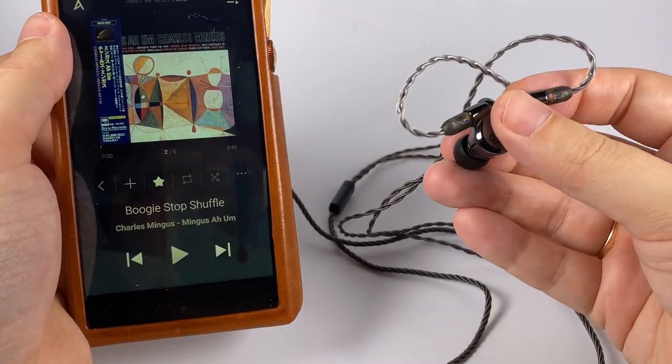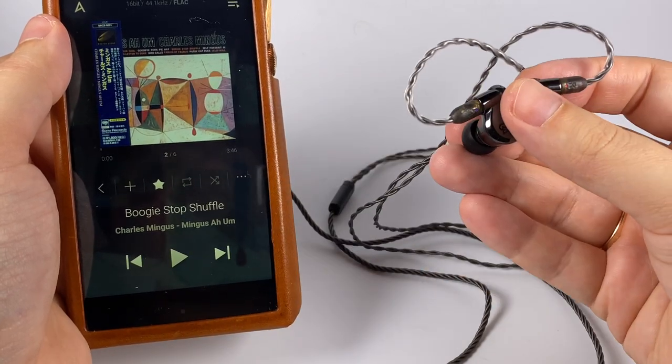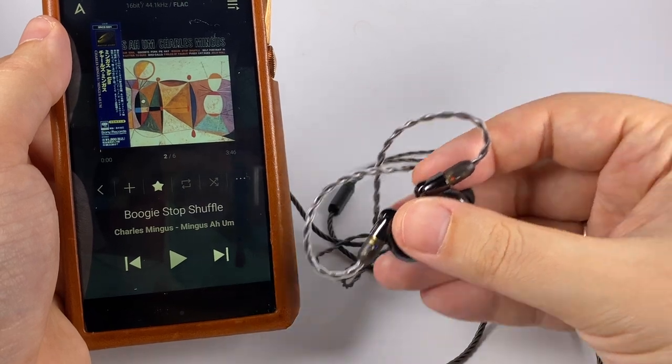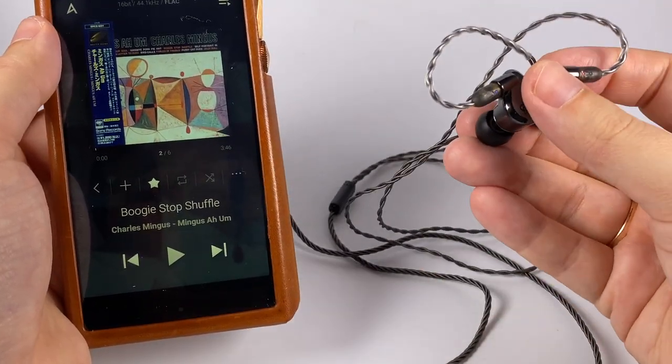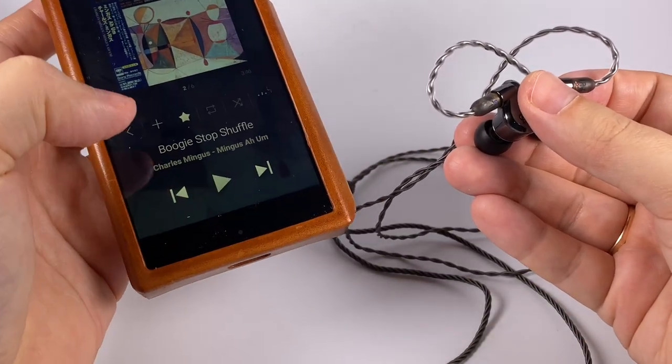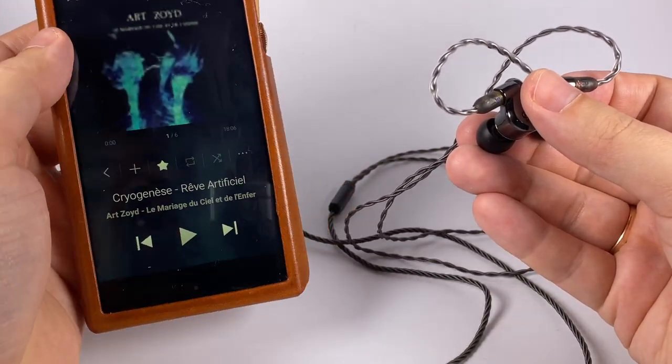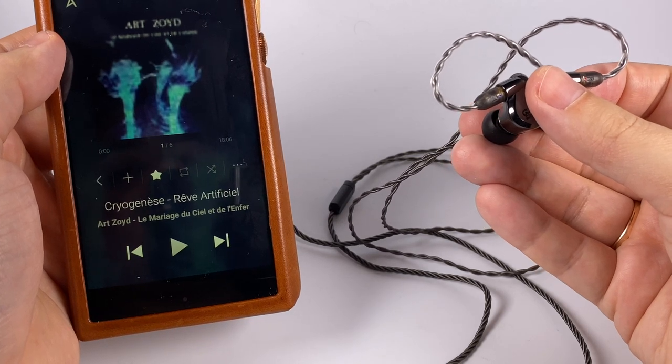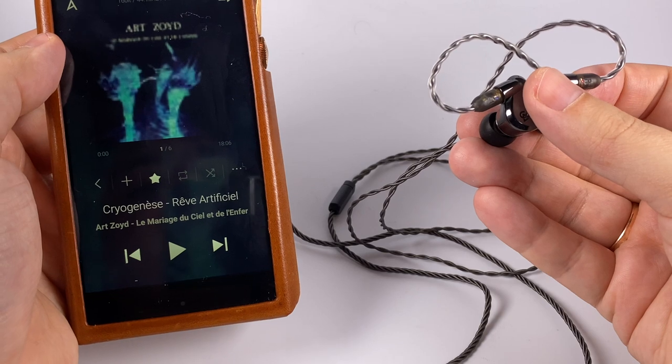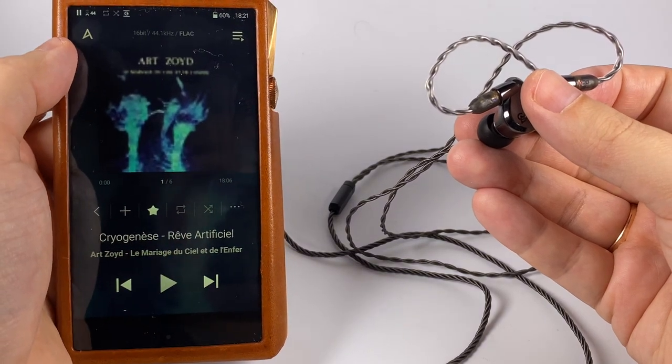And first example track - it's Charles Mingus, Boogie Stop Shuffle. And this track has nice, really fast percussion and these earphones play it nicely because of that fast nature of balanced armatures.